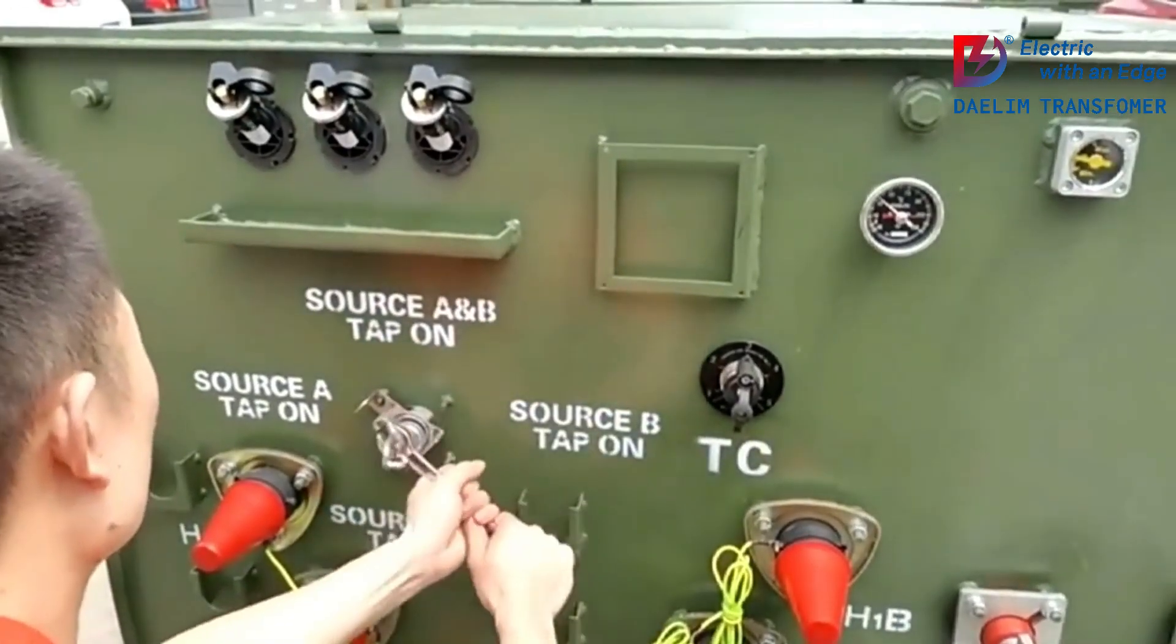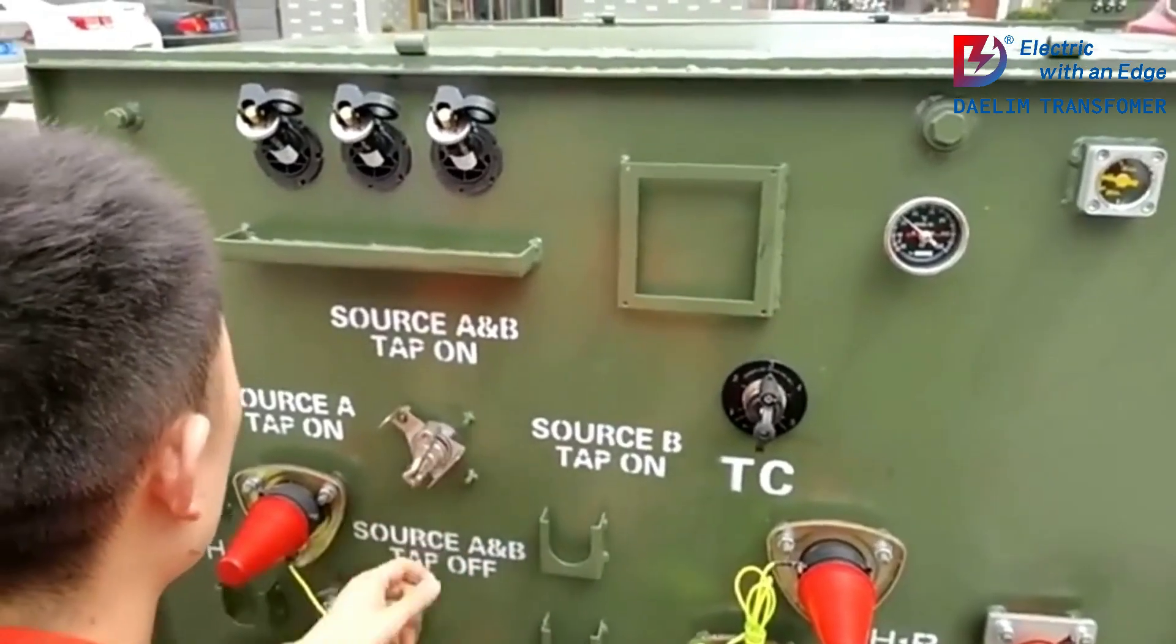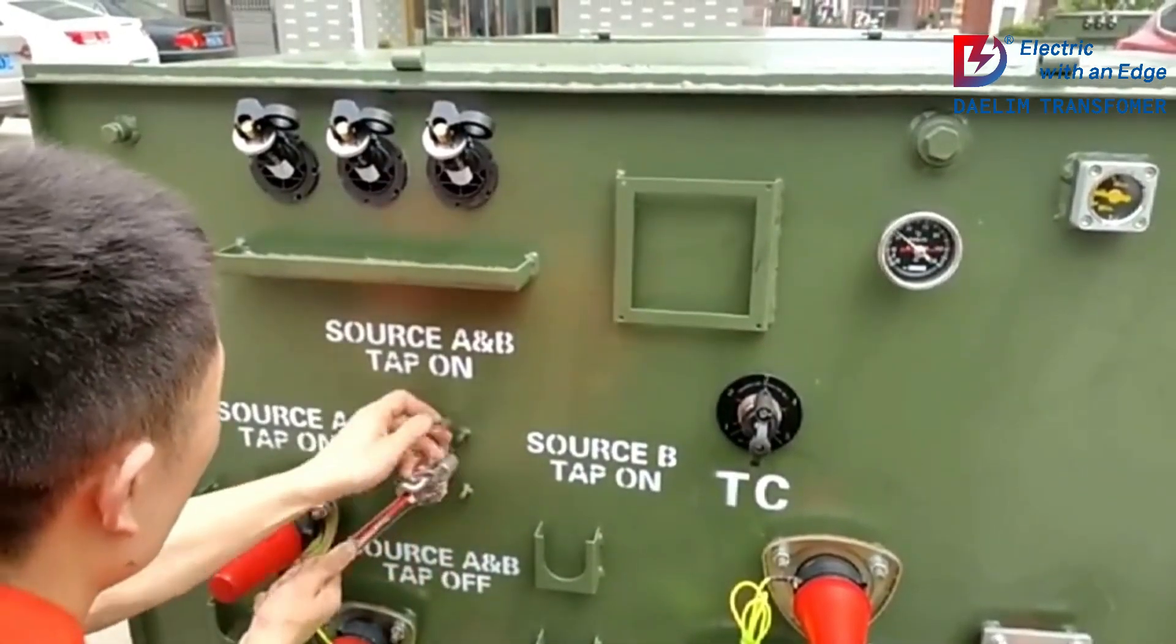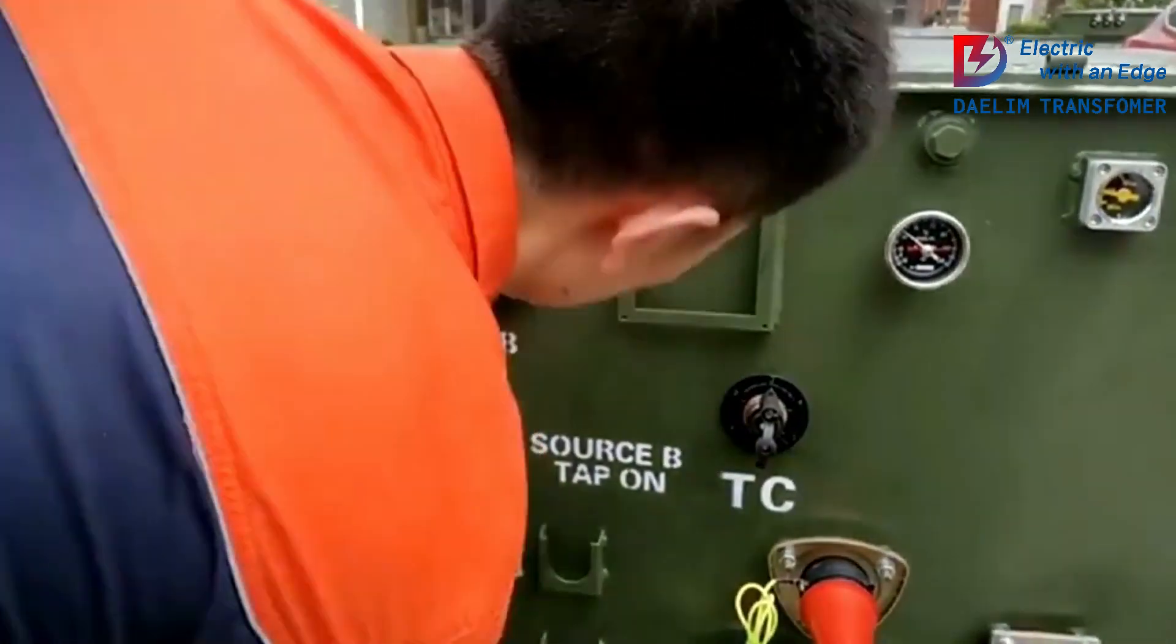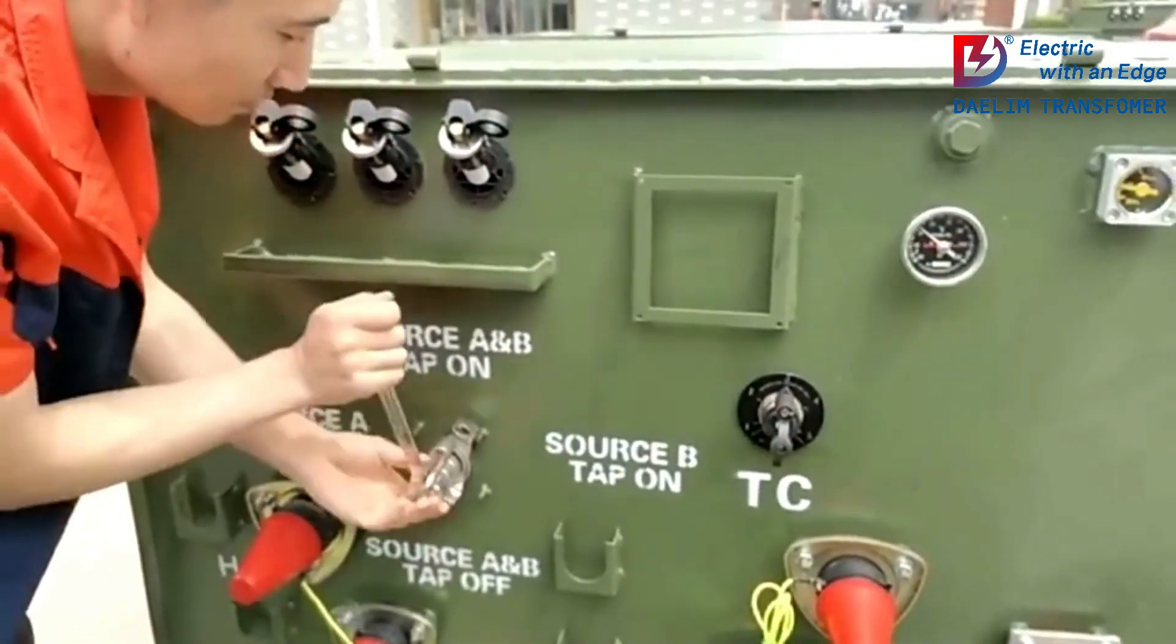So why is transformer impedance important? First, it impacts voltage regulation. Higher impedance results in better voltage regulation under varying loads, meaning the voltage drop across the transformer is minimized when the load changes, ensuring a stable output voltage.